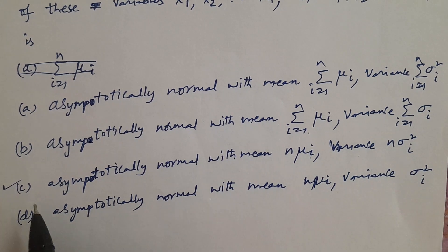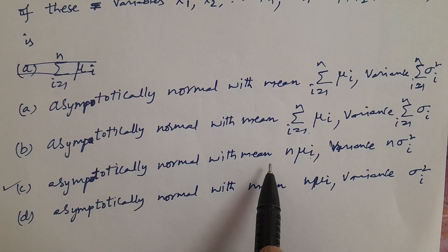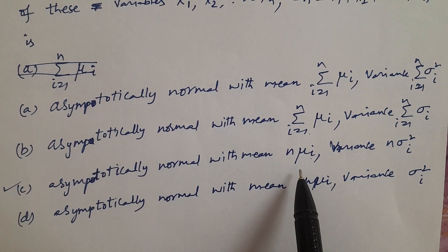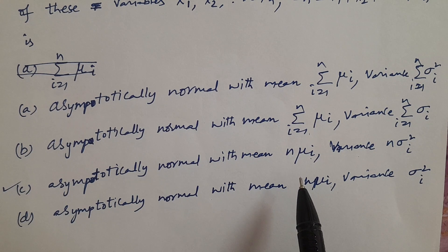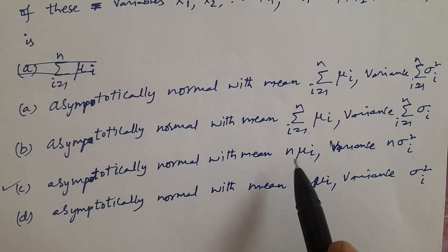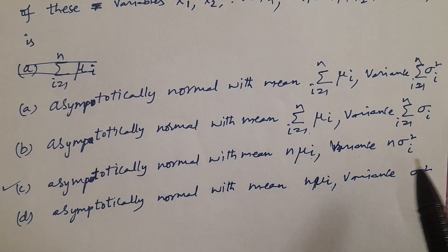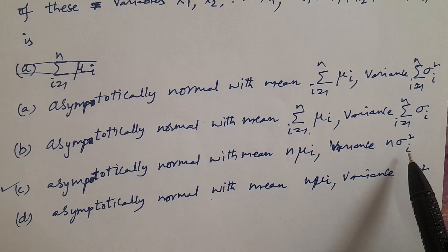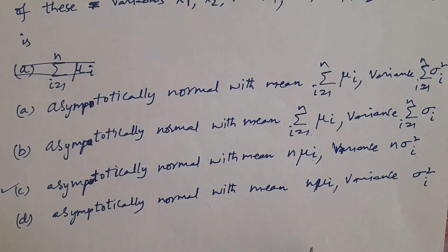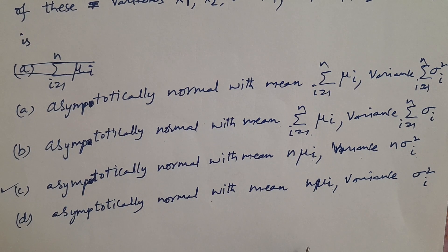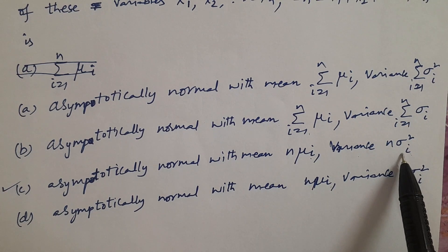The correct answer is C — asymptotically normal distribution with mean nμᵢ and variance nσᵢ². Because all variables are identically distributed, μ1 = μ2 = ... = μn = μᵢ and σ₁² = σ₂² = ... = σₙ² = σᵢ². Therefore the total mean is nμᵢ and total variance is nσᵢ². When random variables are iid, this is the answer.